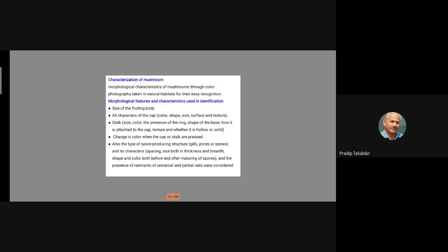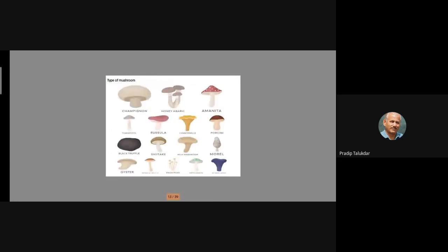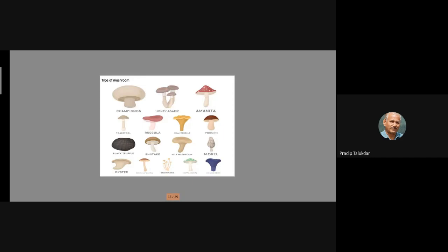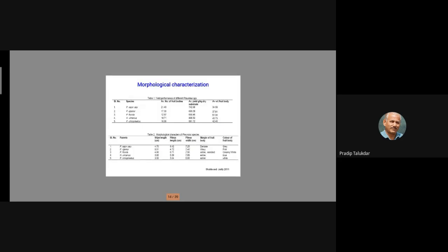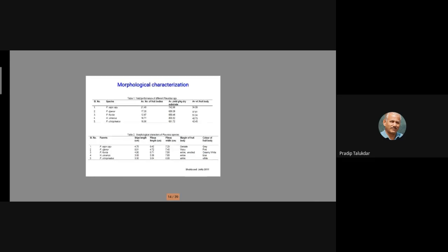Types of mushrooms you should know include toadstool, Amanita, champignon, oyster, and Shiitake - each with different colors and shapes that are markers. I repeatedly emphasize this because people confuse these with molecular markers later. For example, different fruiting body characteristics - number, stripe length, margin - have been used to characterize different Pleurotus species accordingly.